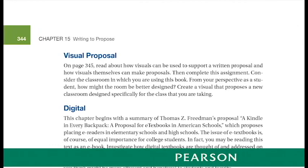The proposal, then, should make connections for readers between the proposed space and the familiar space. For example, when I give this assignment, I also add the constraint that they can't alter the dimensions of the room. They can't, for example, propose that the classroom be as big as a town. I tie this constraint to conversations about identifying the problem and identifying the scope.